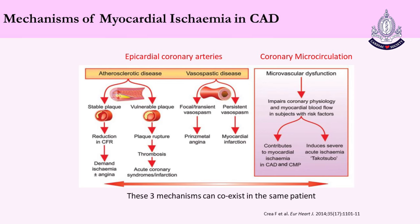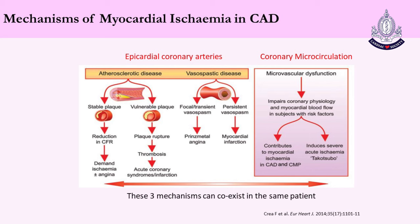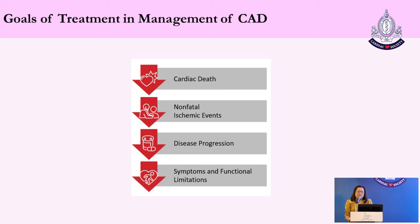This is the underlying mechanism of myocardial ischemia in coronary artery disease. It can occur both in epicardial coronary arteries as well as the coronary microcirculation. In epicardial arteries, the mechanism can be atherosclerosis or vasospastic disease. In microcirculation, there will be microvascular dysfunction leading to coronary physiology impairment and myocardial blood flow impairment. All three mechanisms can coexist in the same patient. The ultimate goals of treatment are: reduction of cardiac death, reduction of non-fatal ischemic events, reduction in disease progression, and reduction of symptoms and functional limitations.